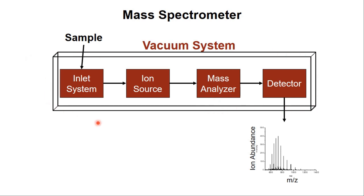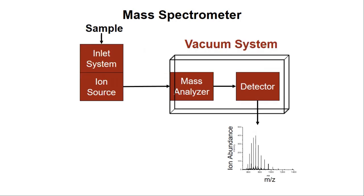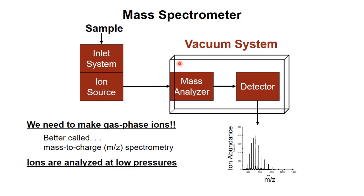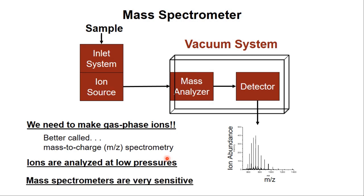This vacuum system can encompass all the components of a mass spectrometer. Sometimes only the sample inlet system and the ion source itself can be outside the vacuum system. In this case, ions which perhaps are produced at atmospheric pressure are then transferred into the vacuum system where mass analysis occurs. In mass spectrometry, we need to make gas phase ions — that's why the ion source is so essential. More precisely, mass spectrometry might be better termed mass-to-charge spectrometry, but that is a mouthful. These gas phase ions are then analyzed under low pressure, making mass spectrometry a very sensitive and powerful technique.